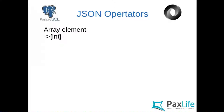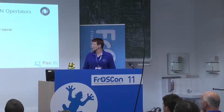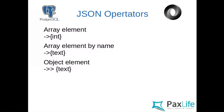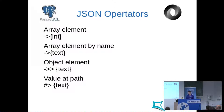JSONB has several operators. An array element is returned by position. You can also access array elements by name if you know the name. We have objects inside JSON — you can get those objects, and you can get a value at a certain path, so you can specify exactly which value from an array you want.